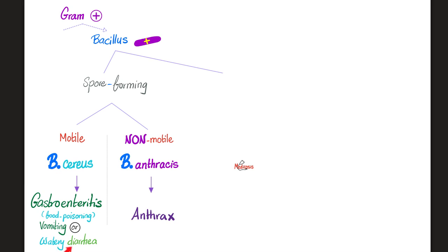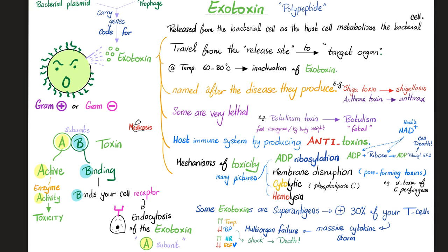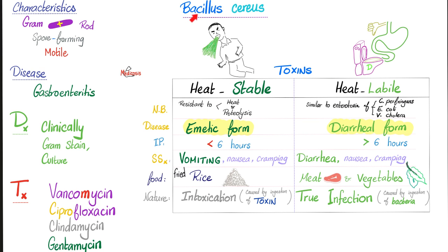We have the emetic type or the diarrheal type of food poisoning caused by Bacillus cereus. What kind of toxin are we talking about? Exotoxin. The word cereus means wax-like or wax-colored — because this is how these colonies appear on culture. They appear as dull with a surface that looks like frosted glass.